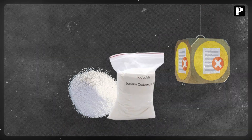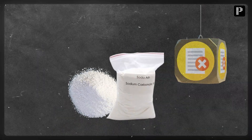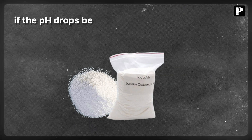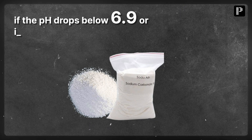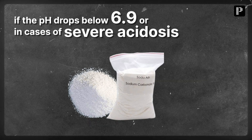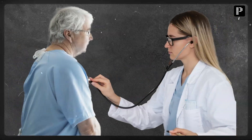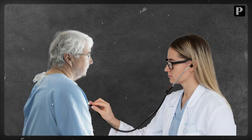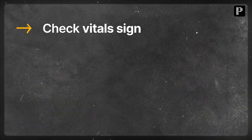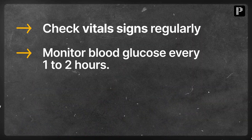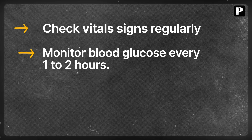Managing acidosis can be tricky. Bicarbonate therapy is controversial but can be considered if the pH drops below 6.9 or in cases of severe acidosis. Continuous monitoring is essential during the treatment — check vital signs regularly and monitor blood glucose every one to two hours.